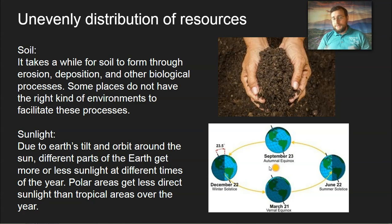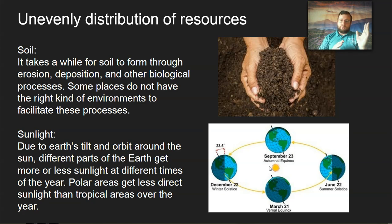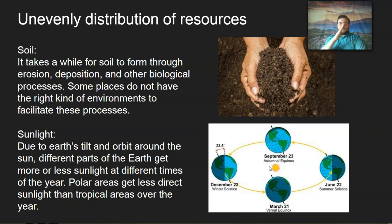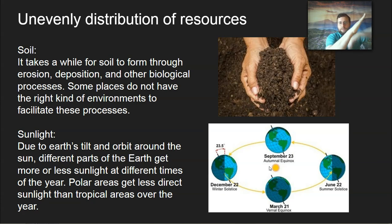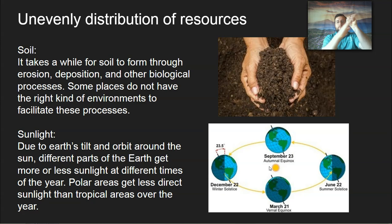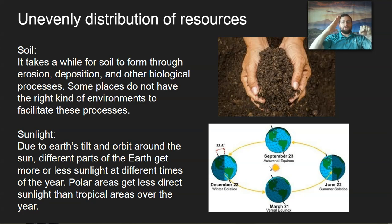There's also sunlight, which is an inexhaustible resource, but it's included here because it is unevenly distributed. The Earth has a tilt, so sunlight hits the Earth at different angles at different times of the year. As the Earth goes around the sun, different parts get sunlight. For example, if my hand represents the northern hemisphere and the sun is over here, right now the northern hemisphere is tilted towards it, so it will be summer.